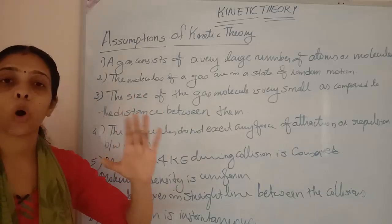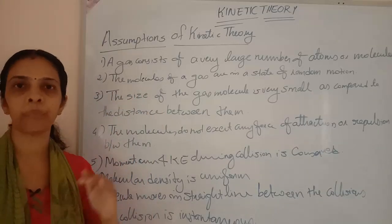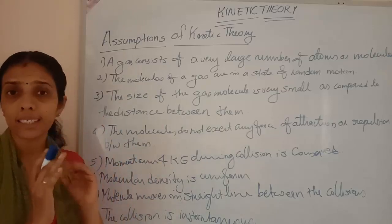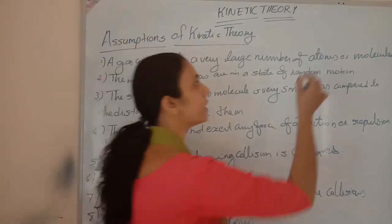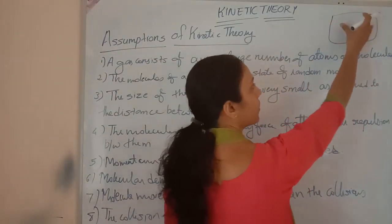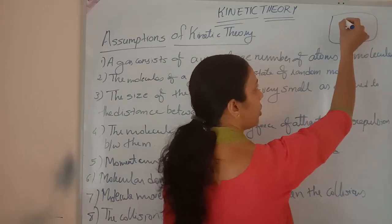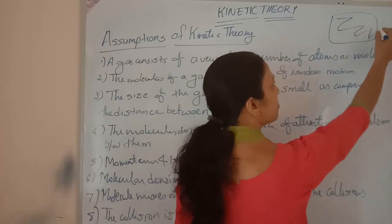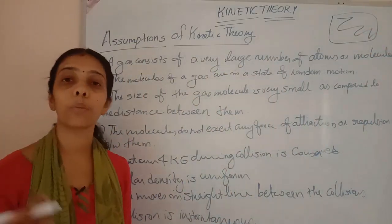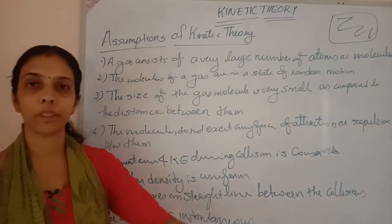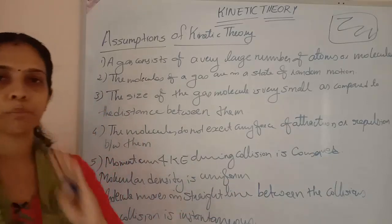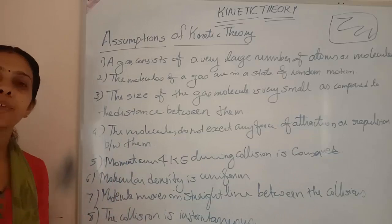The next assumption is that the molecules of a gas are in a state of random motion. 'Random' means in a disordered manner. If a gas is enclosed inside a particular volume, the molecules will be in random motion — we cannot predict the position of any molecule at a particular instant of time.